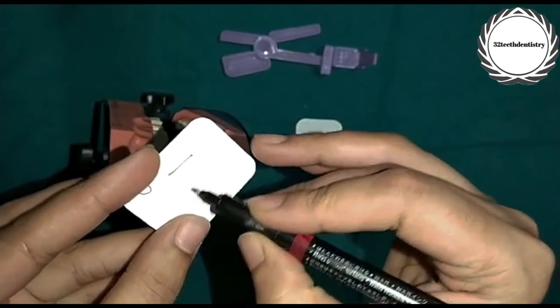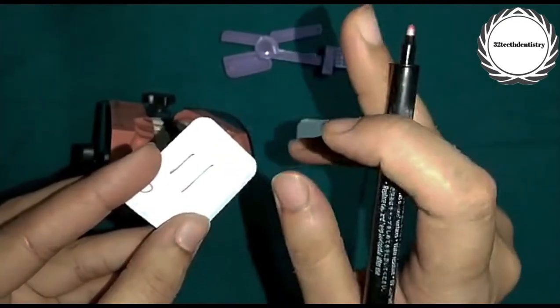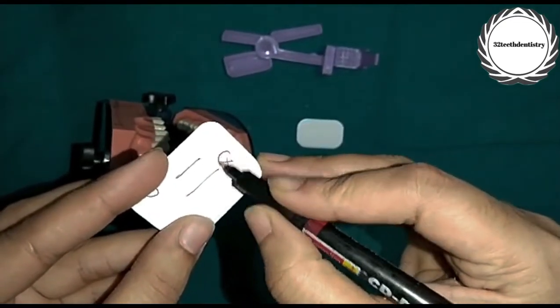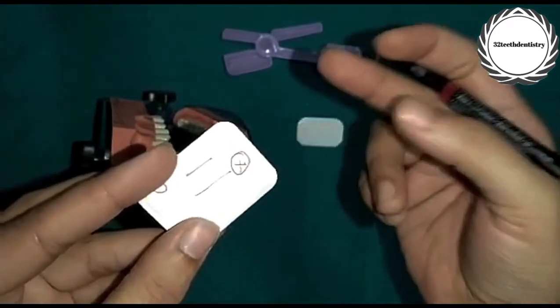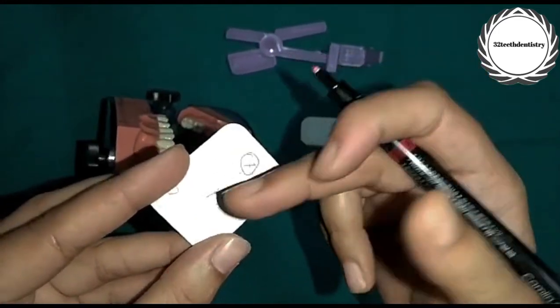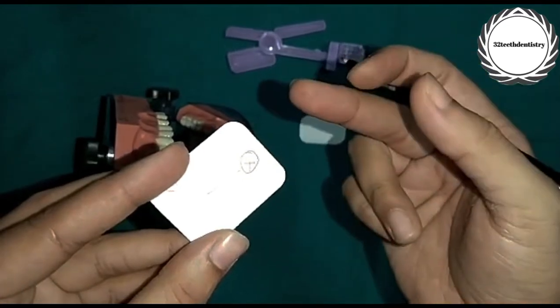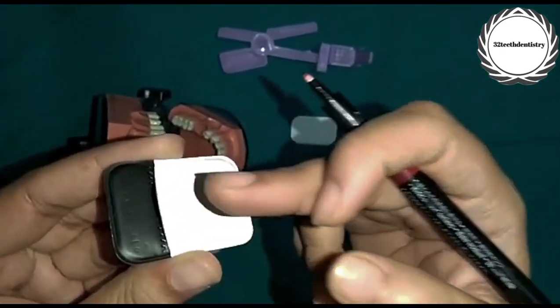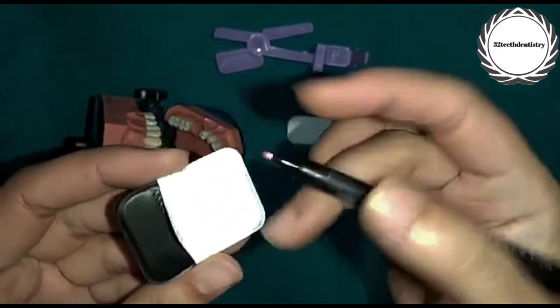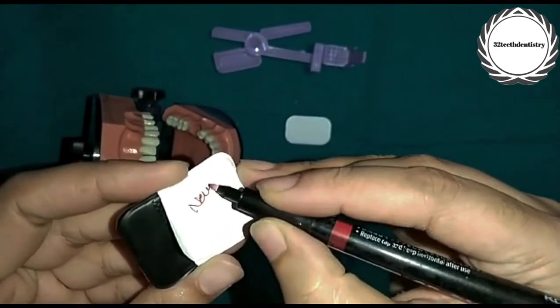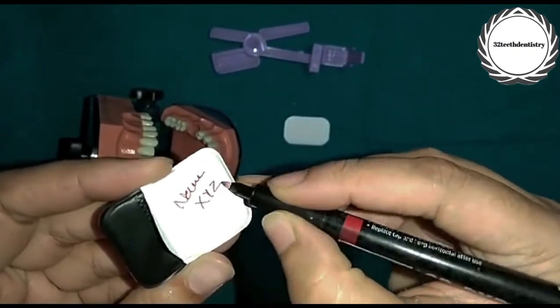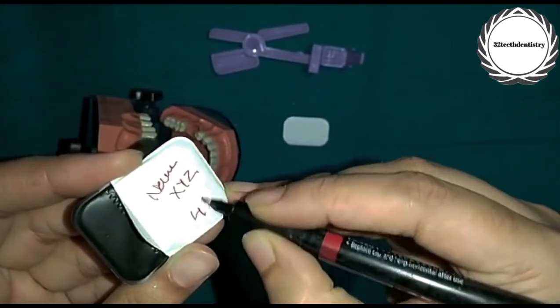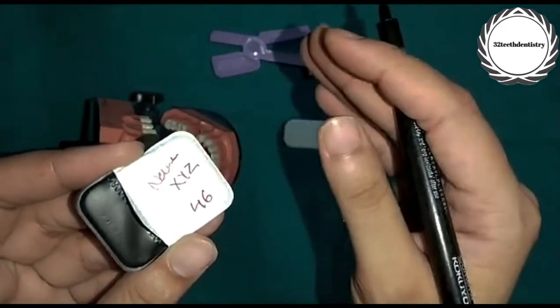I have seen a lot of people who have written the name and number of patients on the front - this is the wrong way. Why? Because when we see the components of the film, here there is emulsion which is bad for the film. Ideally, on the back side there is a lead foil, so you should always write the patient's name, which is XYZ, and its tooth number, consider it to be 46, for identification.